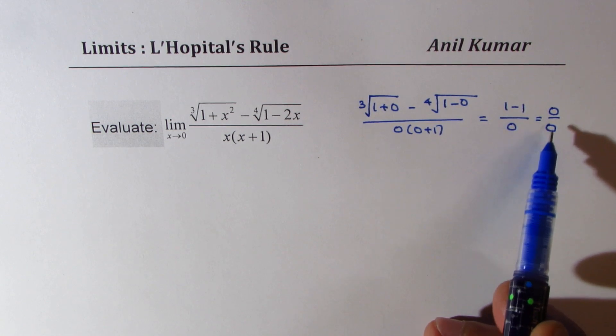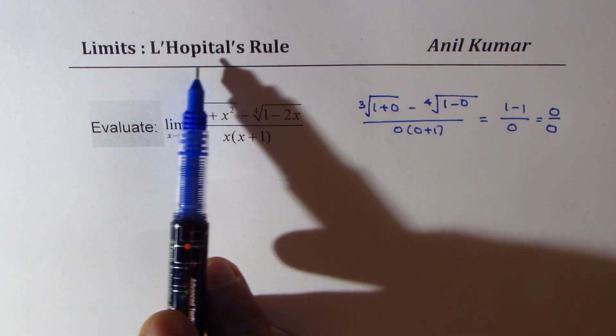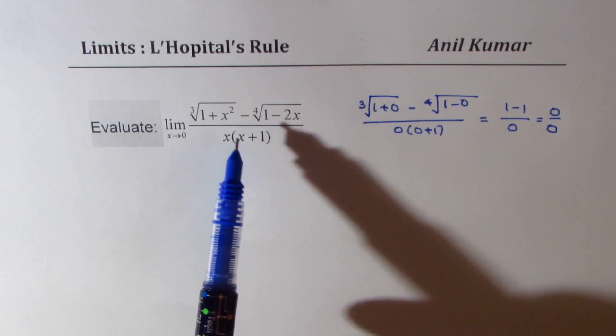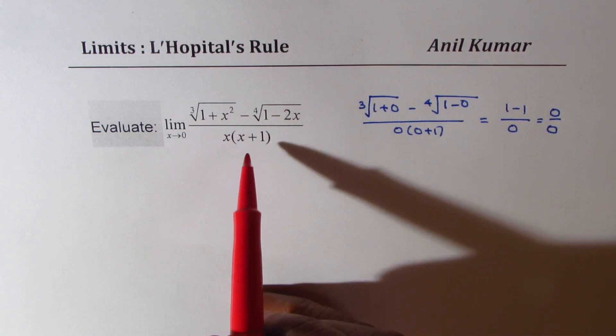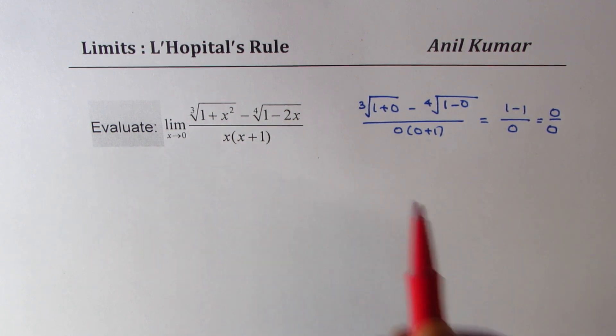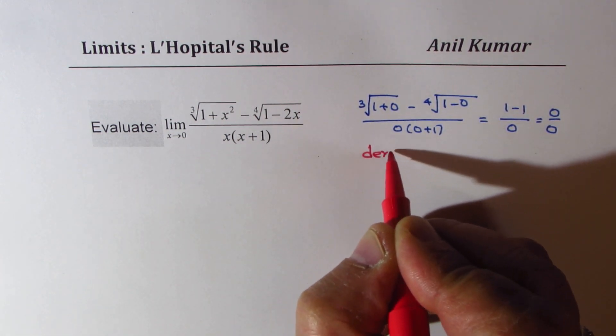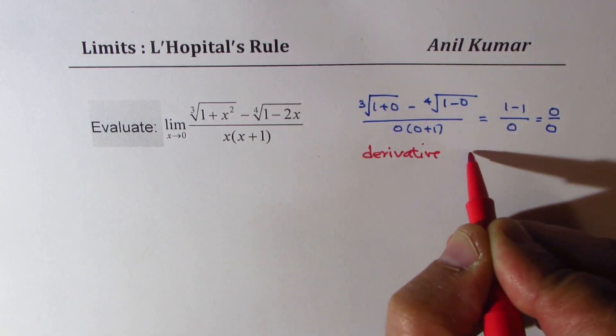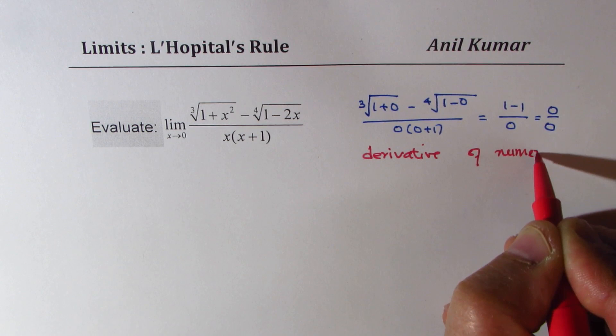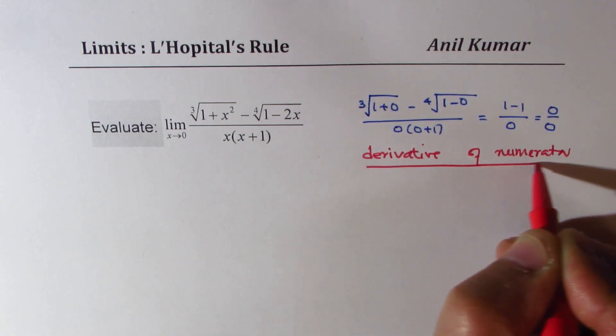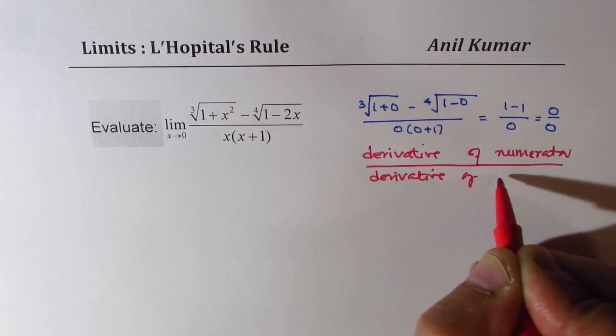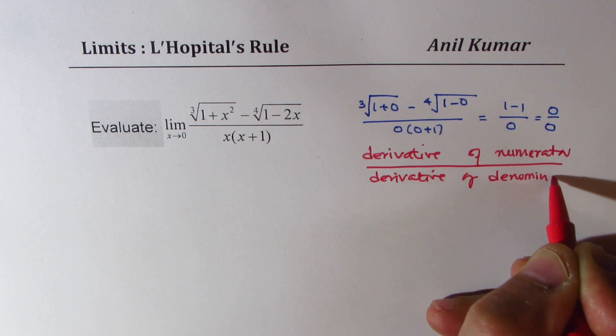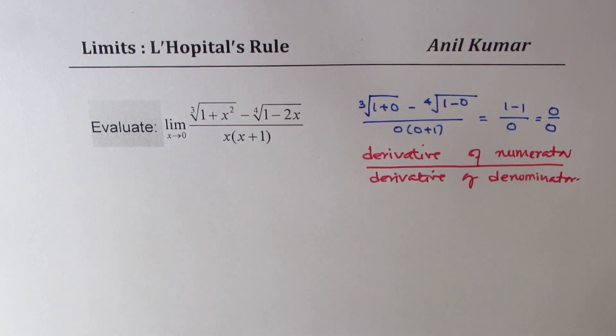So, whenever you get 0 over 0, you could actually apply L'Hopital's rule. So, in this particular case, we'll apply L'Hopital's rule to find the limit. That is to say, we'll find derivative of numerator and derivative of denominator, and then find the limit. That's the whole idea.